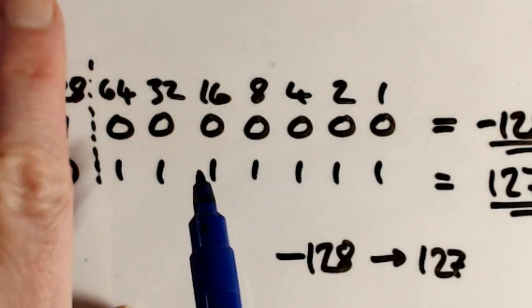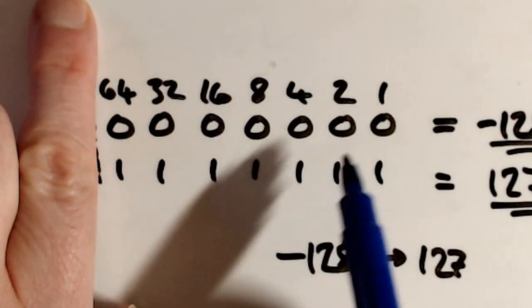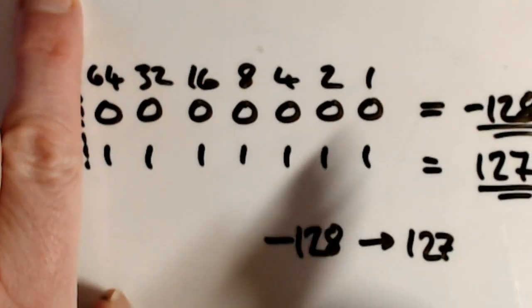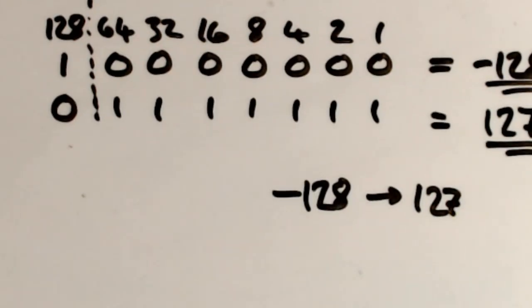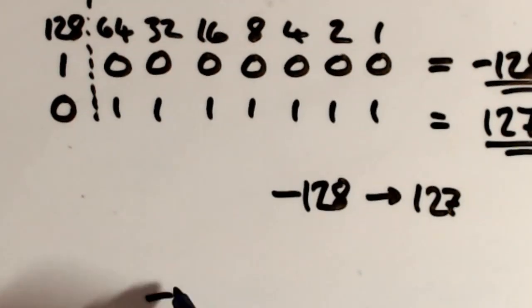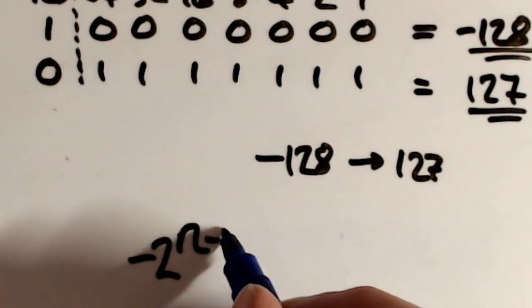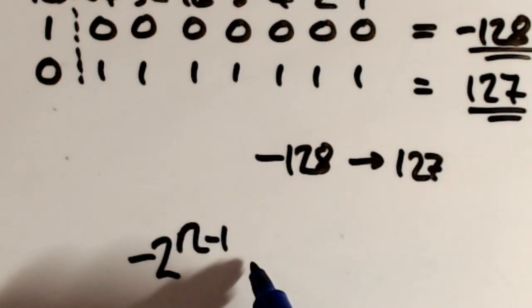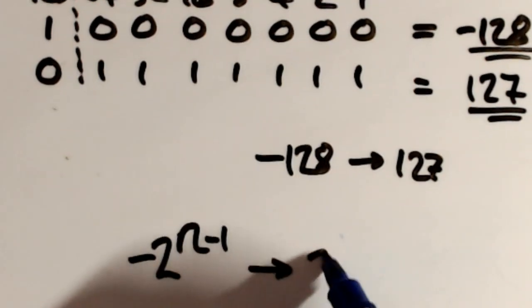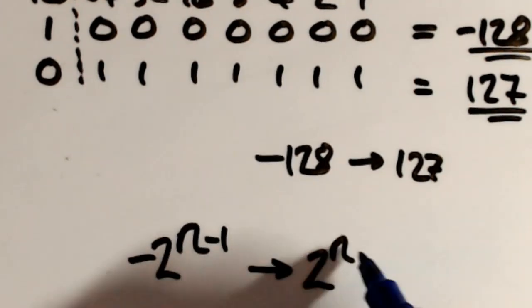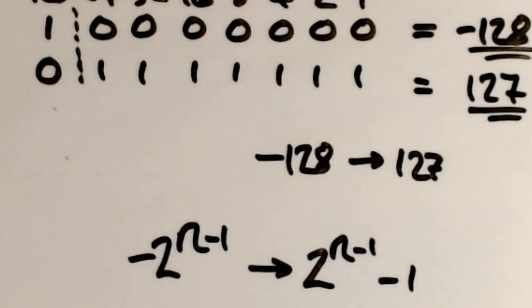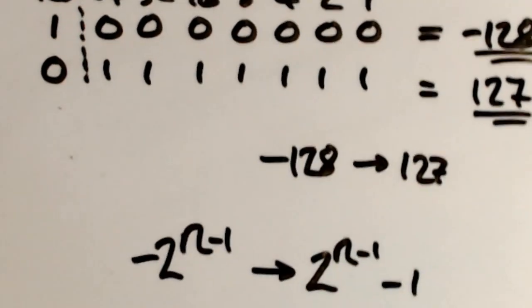That represents if it's positive or negative, and these are actually representing the value. Now there is a formula. So that's negative 2 to the N minus 1, it's the smallest. 2 to the N minus 1, minus 1.